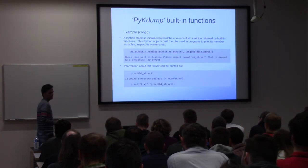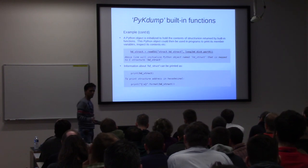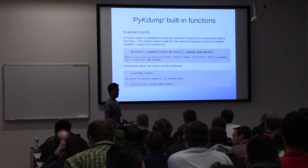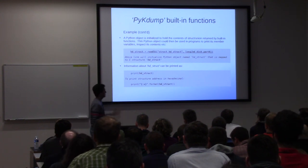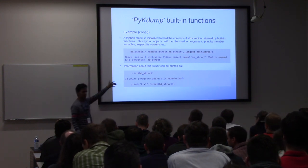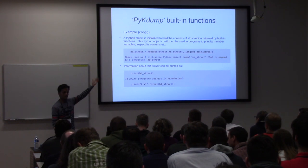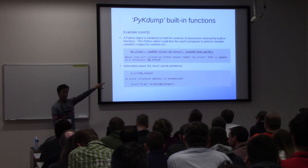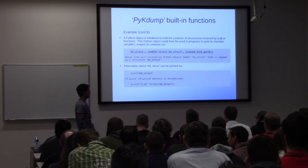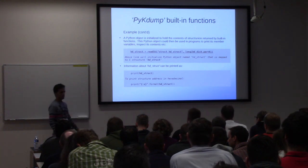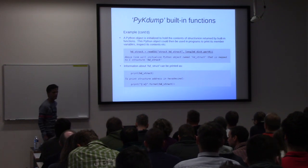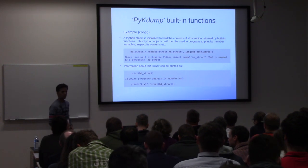Once you have that Python object, to print the `hd_struct` object, you just use a normal Python print statement and it will print its address. If you want to print its member variables, just do `hd_struct.attribute_name` and you get its value. You can use Python's print formatting options to print in hexadecimal, binary, decimal, or your choice of format.